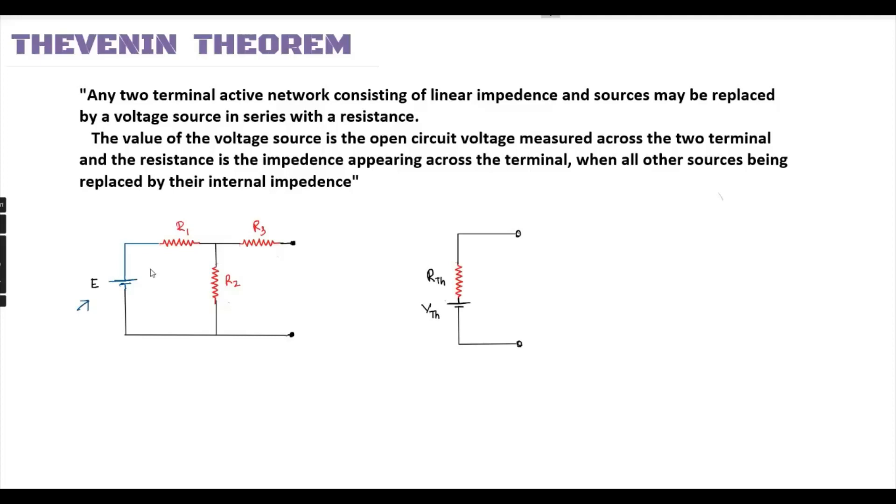The voltage source in series with resistance can replace the active network. The circuit has voltage source with resistances R1, R2, R3 connected to the open terminals A and B.